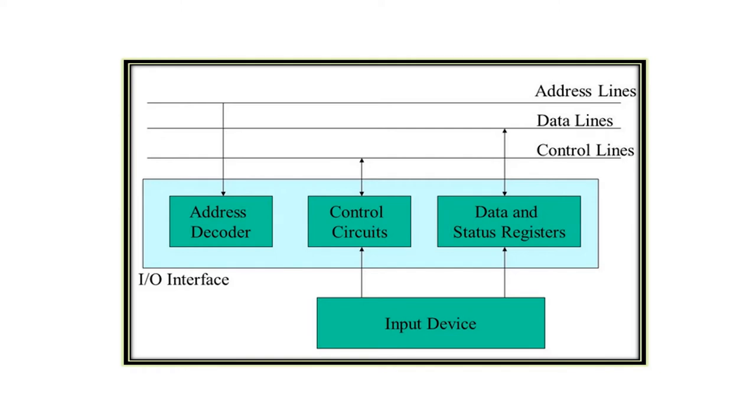The address decoder is used to select a data in the peripheral. Control circuit is used to issue commands to the devices to give instructions about the task to be accomplished. Data registers are used to store data into or read data from data registers. Two data registers are DIN and DOUT, that is data in and data out.